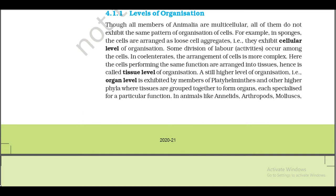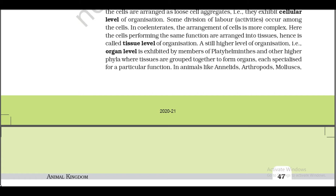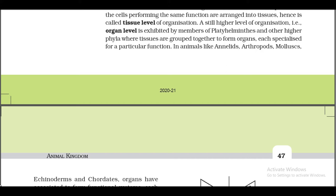For example, in sponges the cells are arranged as loose cell aggregates — that is, they exhibit cellular level of organization. Some division of labor occurs among the cells. In coelenterates, the arrangement of cells is more complex. Here the cells performing the same functions are arranged into tissues, hence it is called tissue level of organization.